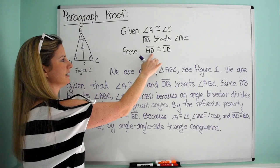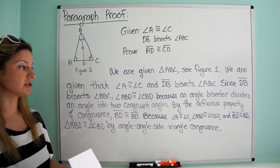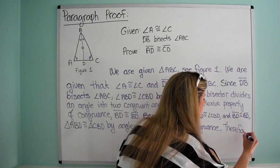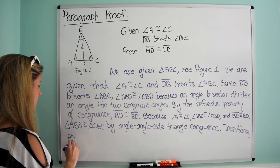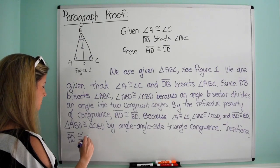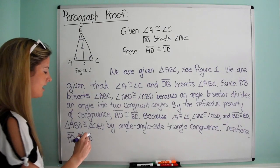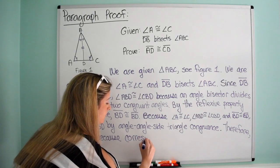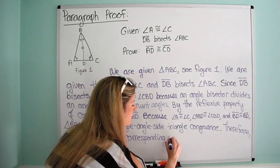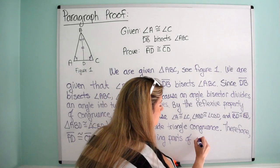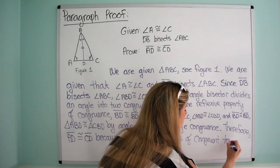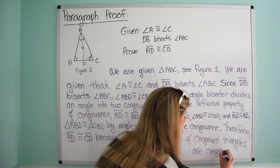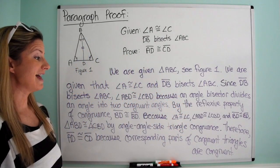Now we know that AD is congruent to CD by CPCTC. We just have to write that out: 'Therefore, segment AD is congruent to segment CD because corresponding parts of congruent triangles are congruent.' And that's it — we proved it.